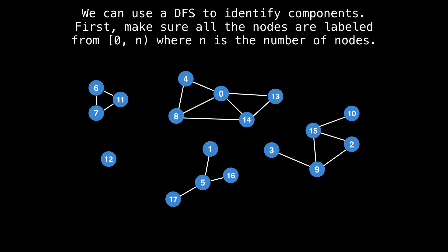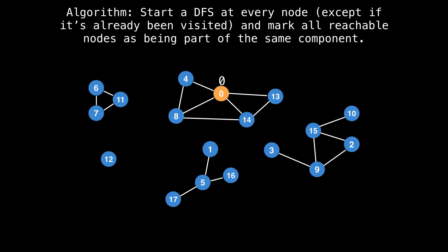We can use a depth first search to identify components this way. First, make sure all the nodes are labeled from zero to n non-inclusive, where n is the number of nodes. The basic algorithm is to start a depth first search at every node, except if that node has already been visited, and mark all reachable nodes as being part of the same component using the same ID. So if we start at node zero, then we do a depth first search here, and every node in this component gets an ID of zero.